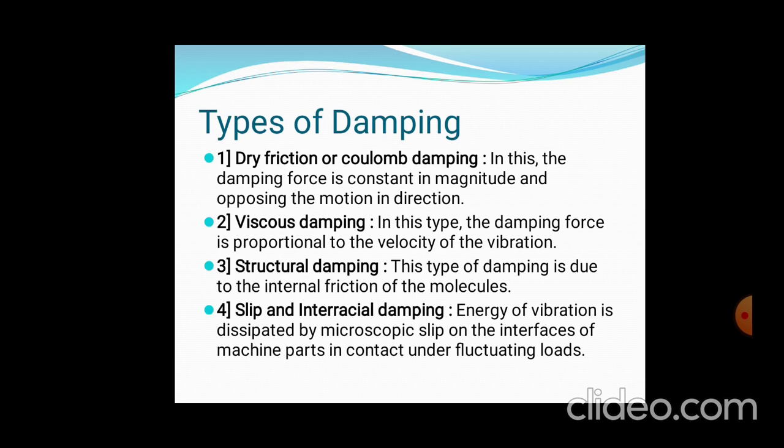What types of damping are available? That is dry friction, viscous friction, structural friction, and slip or interfacial friction. Dry friction means there is friction existing at the contact surfaces of the system — that is why it is known as dry friction or Coulomb damping. Viscous damping means the viscosity of the fluid creates resistance to velocity or motion.